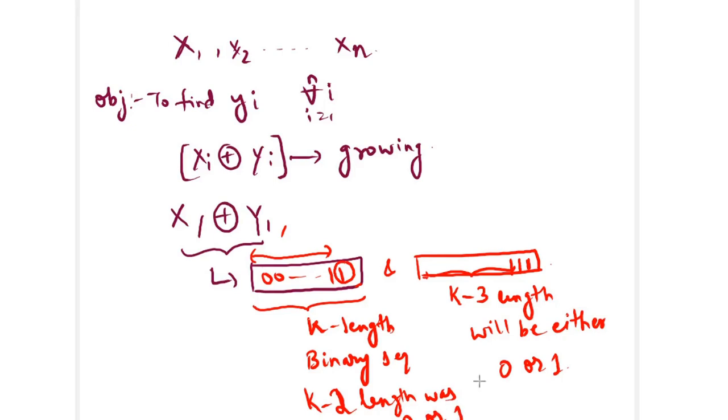Similarly, you need to carry out for all xi XOR yi. Then only you will get the yi sequence.